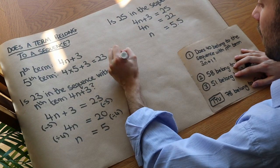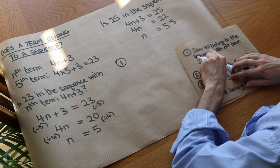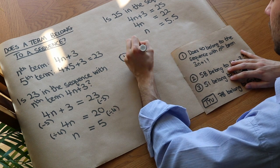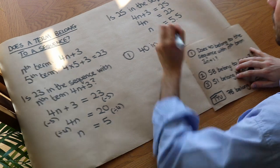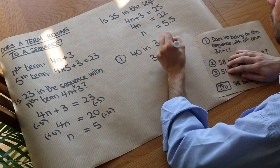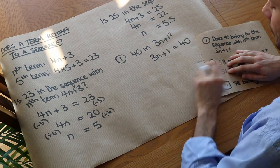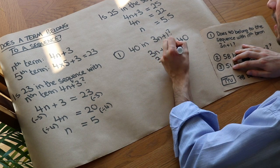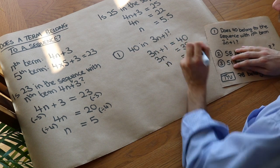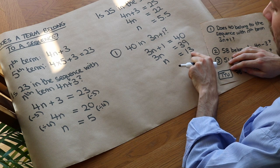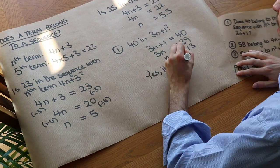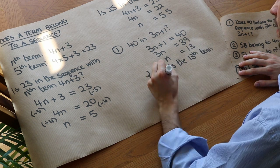Let's do a couple of examples. Does 40 belong to the sequence with nth term 3n plus 1? We set 3n plus 1 equal to 40. We subtract 1 from both sides to get 39, then divide both sides by 3 to get n equals 13. Because that's a whole number, 40 is in this sequence — it's the 13th term. So yes, it is the 13th term in the sequence.